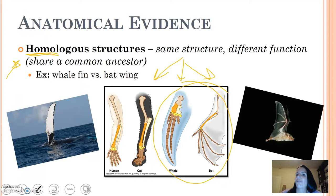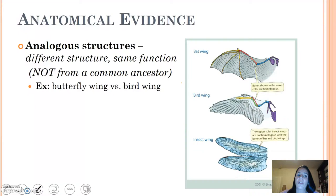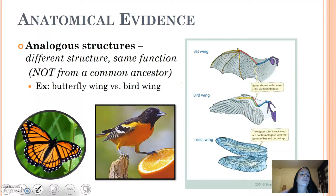We also have analogous structures. This is different structure but the same function, like flying, and they don't have a common ancestor. For example, a butterfly wing and a bird wing — they both use them to fly, but butterflies aren't even vertebrates; they don't even have bones in their wings.